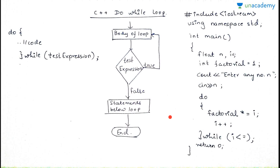Don't forget to end the do-while loop with a semicolon. The condition is i <= n, and this program gives you the factorial of any number. The data type of n is float — though you can take it as int also. Factorial is initialized to 1 and the loop works accordingly. I hope you liked the lecture and enjoyed it. Thank you.